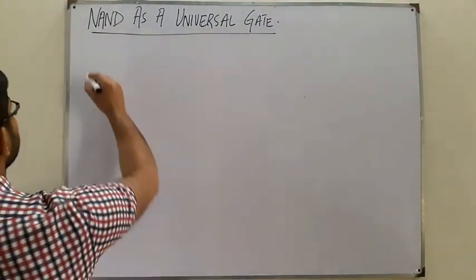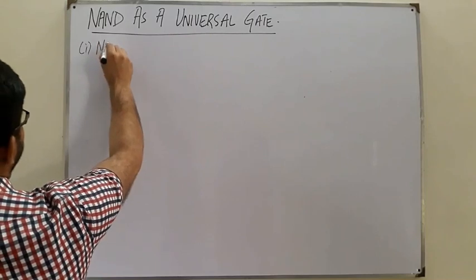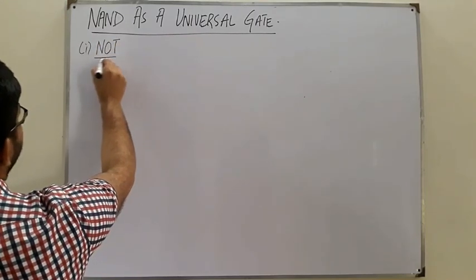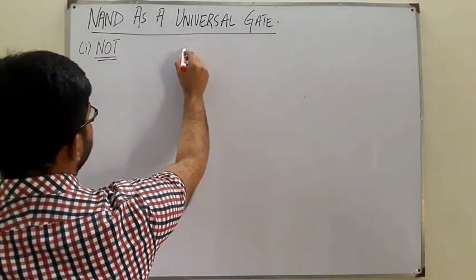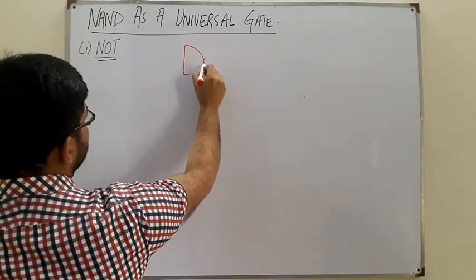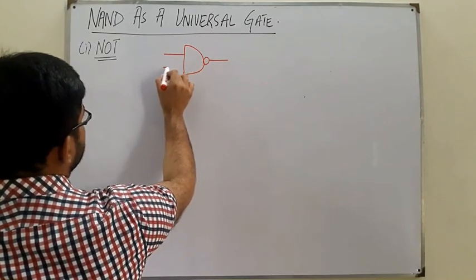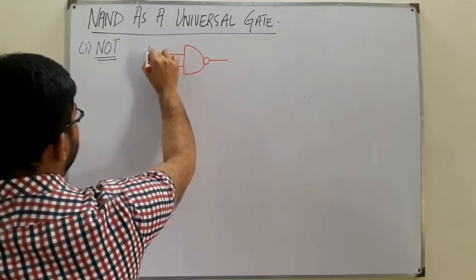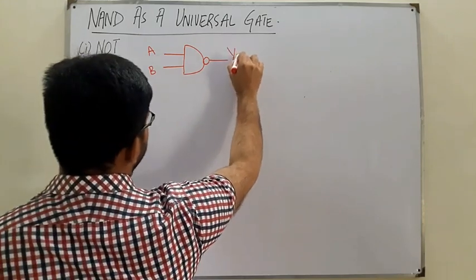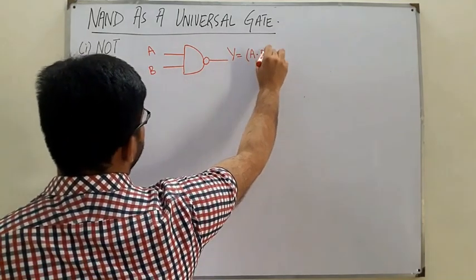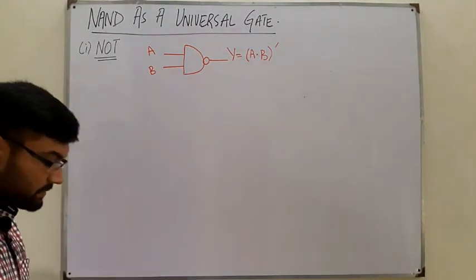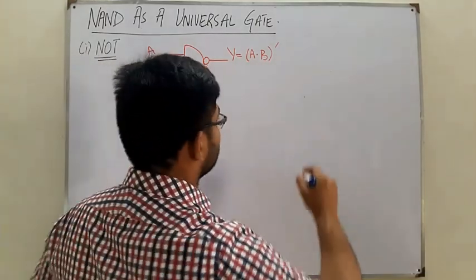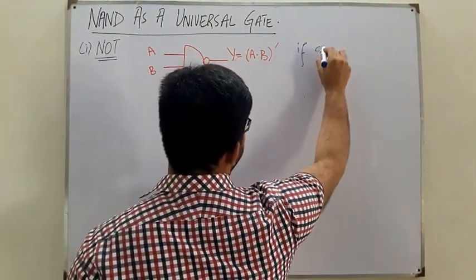Number one: NAND as NOT gate. How do we use a NAND gate as a NOT gate? The NAND gate takes inputs A and B and gives output Y equal to (A AND B) complement. Now if we give similar inputs — that is, the same signal to both inputs — we get the following.